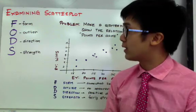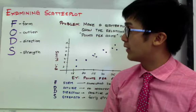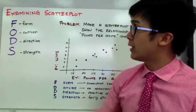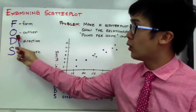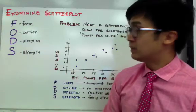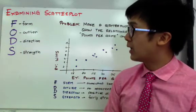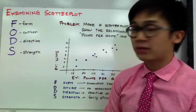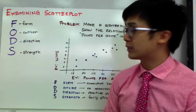In describing the interpretation of a scatterplot, we could use F for form, look for O, outlier, D, direction of your scatterplot, and S for the strength of your relationship in your scatterplot.